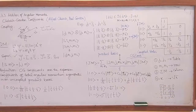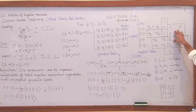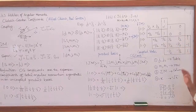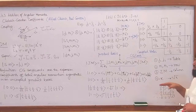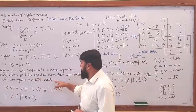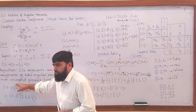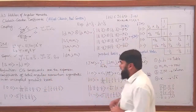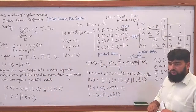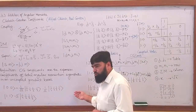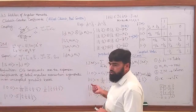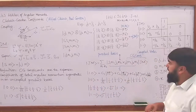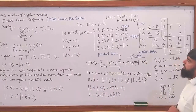The CG coefficients are the coefficients which appear in the product basis — the uncoupled basis. Just as in a vector we have coefficients in front of the unit vectors, like 2 in front of i and 3 in front of j, these coefficients arise due to the addition of angular momentum.